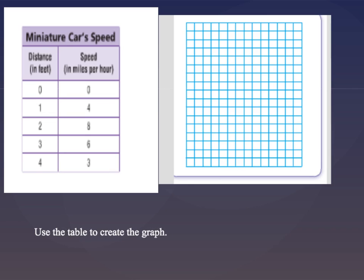Alright, let's use this table to create a graph. So this time I want you to pause the video. I want you to create your own graph. So you'll notice that this one does not have the x or the y axis. So I want you to make your ordered pairs and then graph your information.